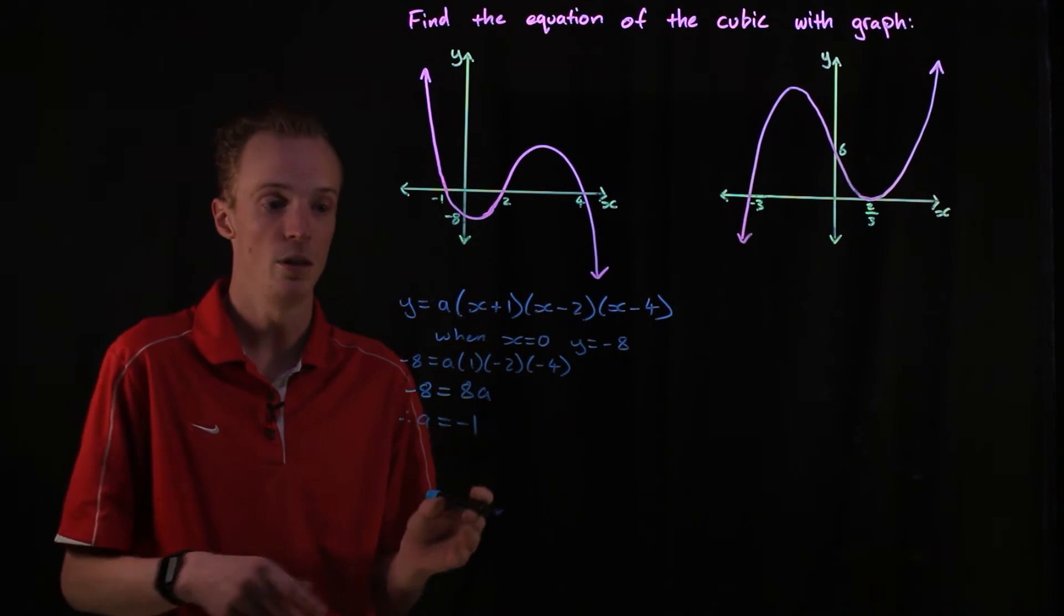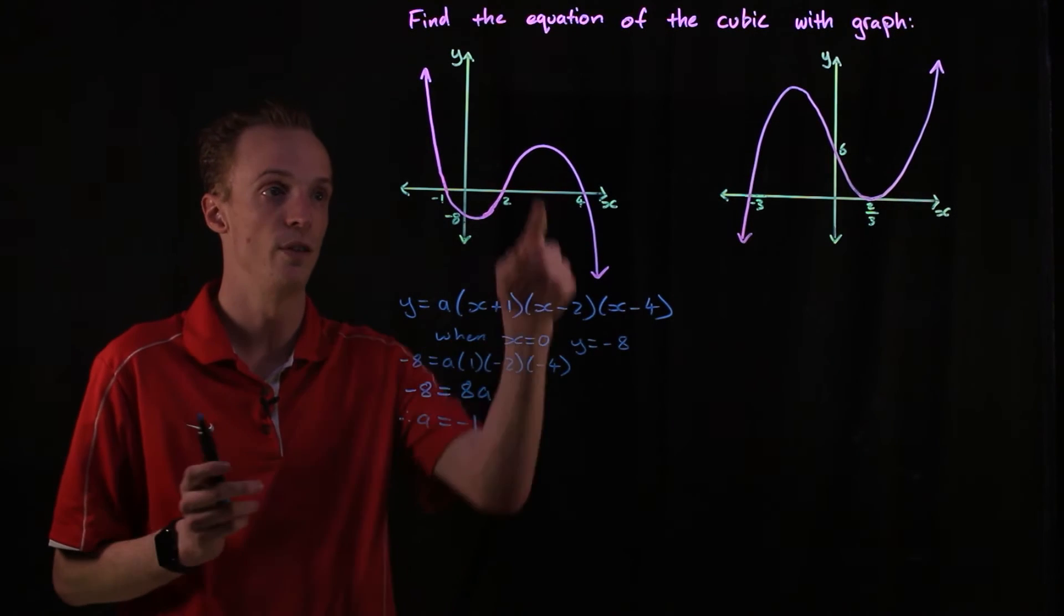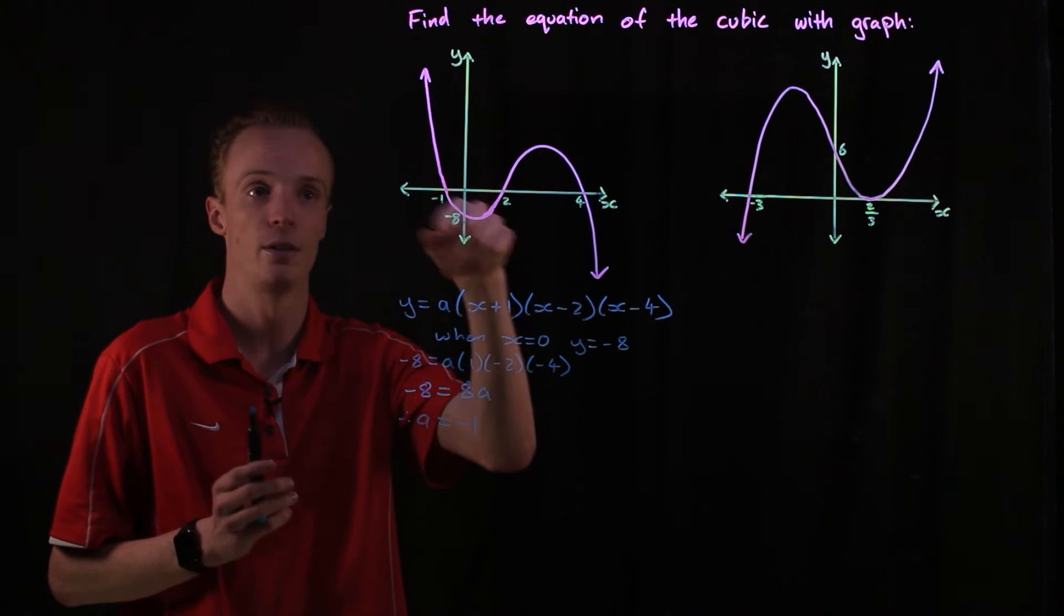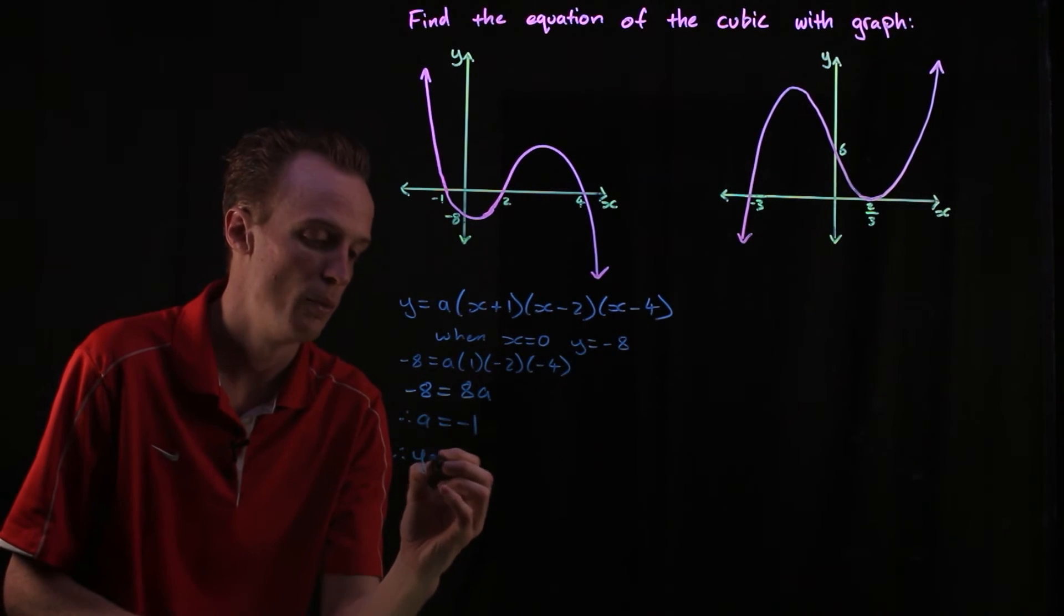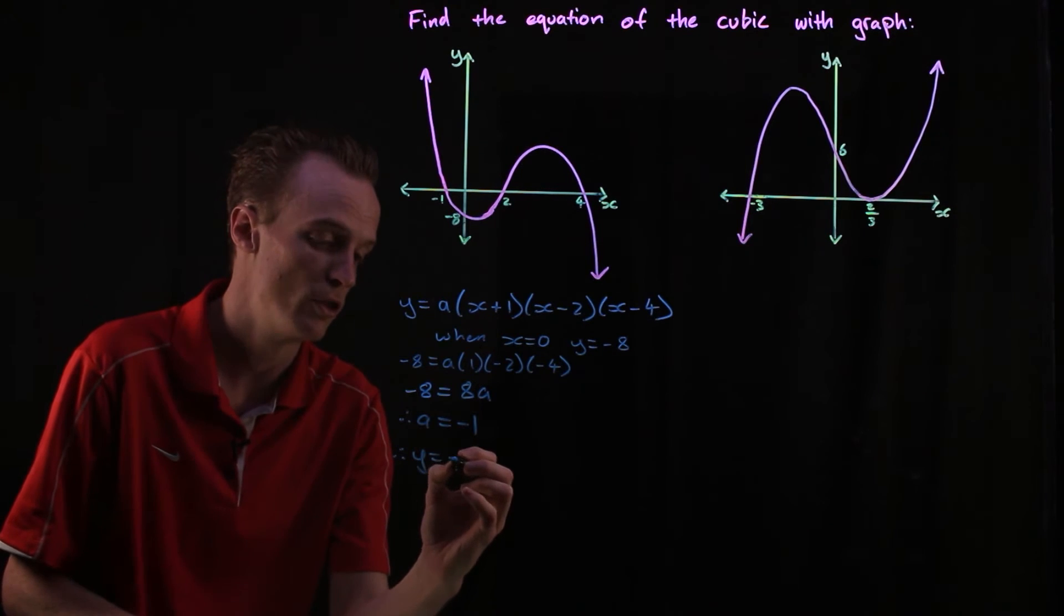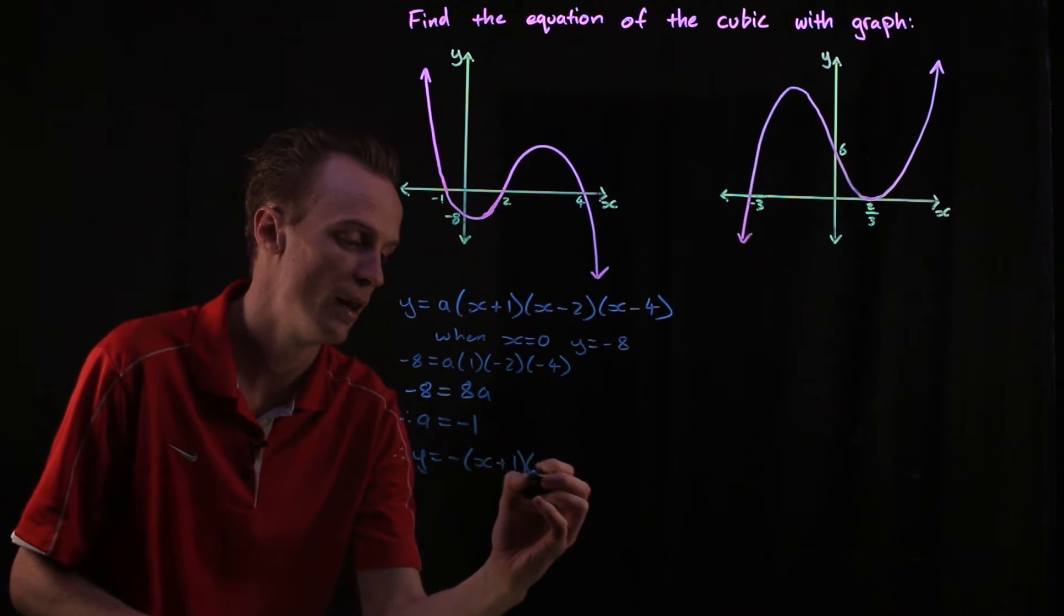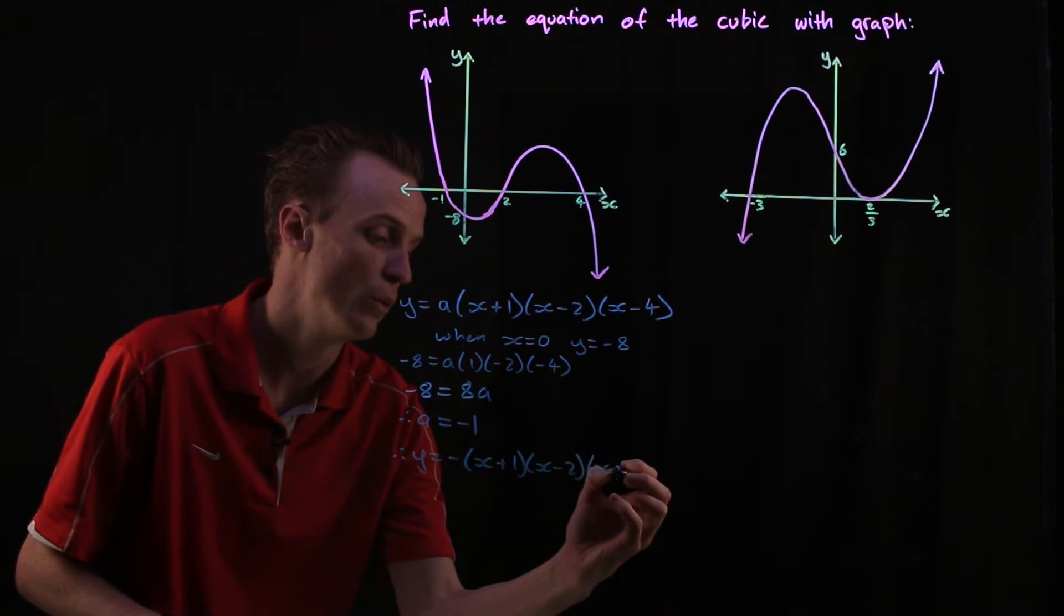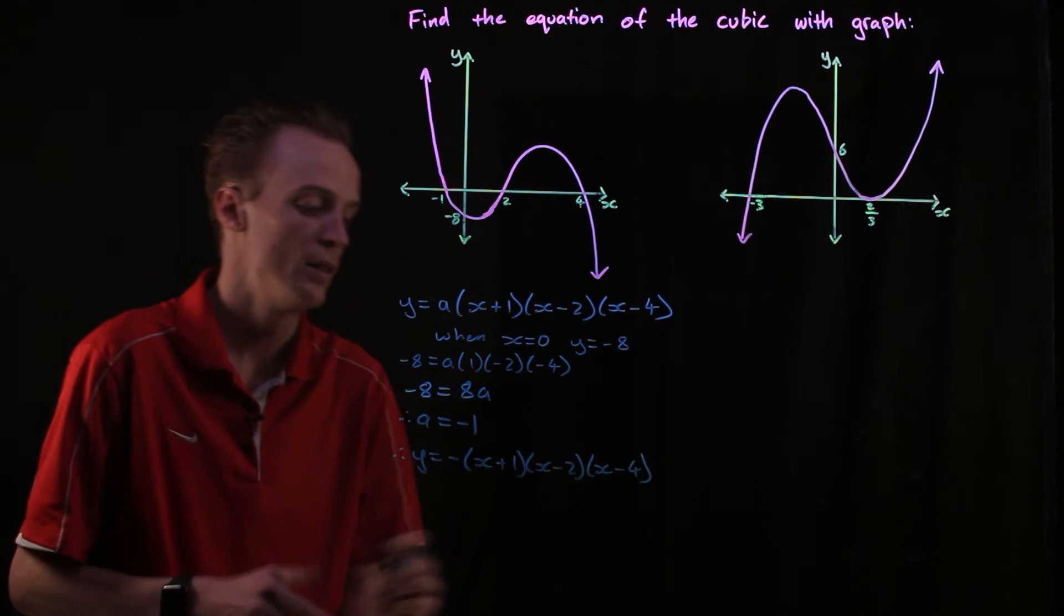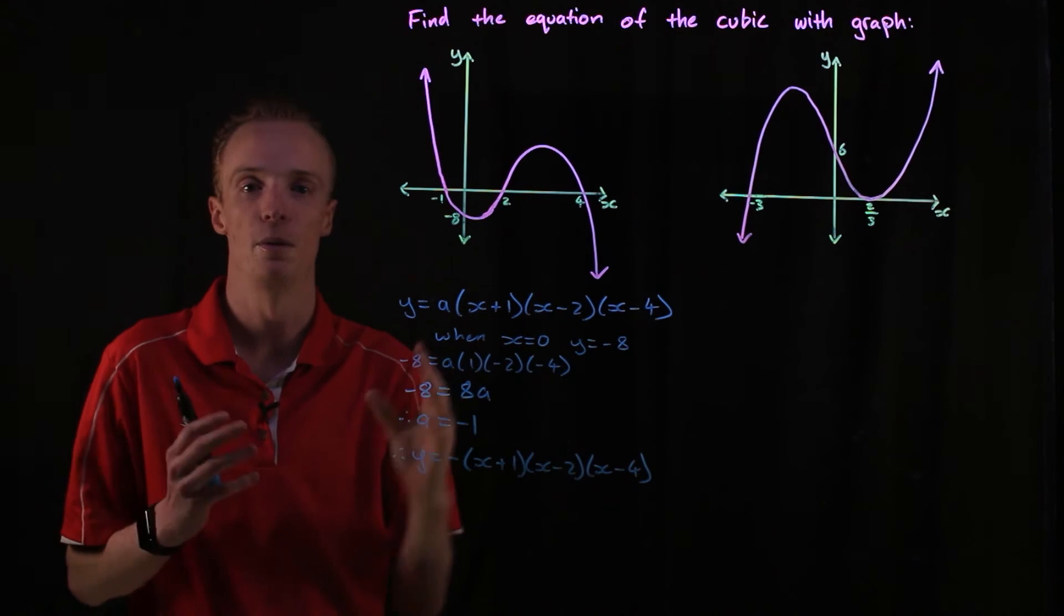So what we do is we substitute this a value back into here and we've found the equation for the cubic polynomial that's graphed here. Therefore our y will equal negative one, which is just negative, times x plus one, times x take two, and x take four.